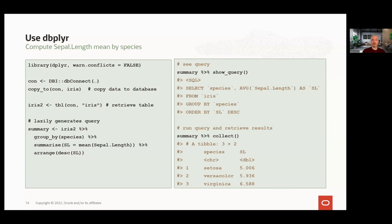Let's consider an example using dbplyr, where we want to compute the mean sepal length for each species in the iris dataset. We first load the dbplyr package and connect to the database. We show creating a database table with the iris dataset and then getting a proxy object called iris2 to use in other dbplyr calls. We lazily generate a query to group by species and summarize the mean sepal length, then arrange the result in descending order. On the right-hand side, we can see the query that is produced. By invoking collect, we actually run the query and get back our result.